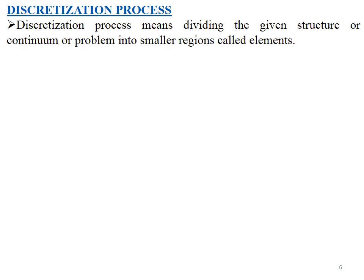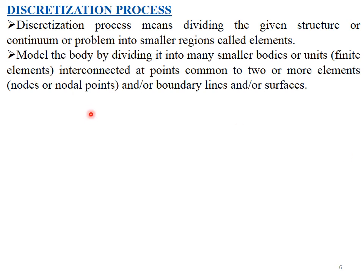Next is the discretization process. Discretization means dividing the given structure, continuum, or problem into smaller regions called elements. We model the body by dividing it into many smaller bodies or units — finite elements — interconnected at points common to two or more elements, called nodes or nodal points, at their boundaries. These elements are interconnected by nodal points or nodes at their ends.